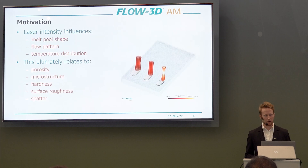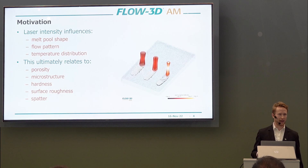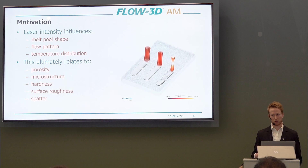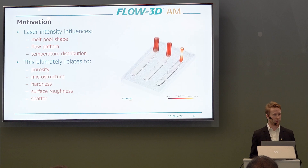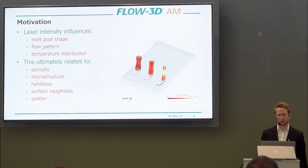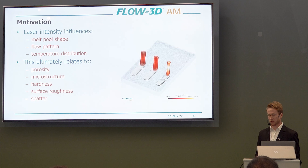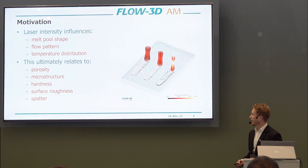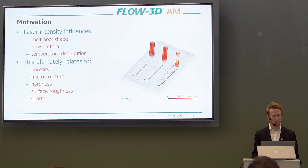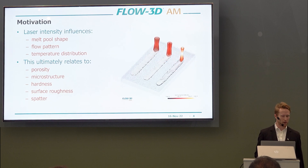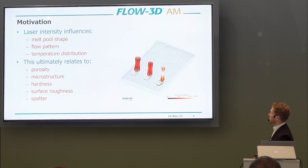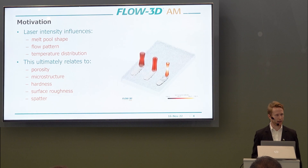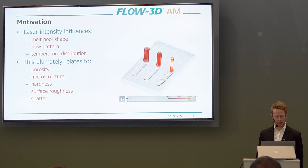Laser intensity influences the melt pool behavior by how we input the energy, which relates to the melting pattern and the pressures and temperatures that develop during the process. The melt pool itself is the key centerpiece of the laser powder bed fusion process, and it relates to many features of the component produced, such as porosity, microstructure, hardness, surface roughness, and spatter.